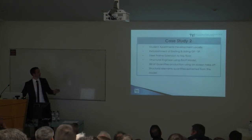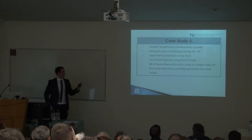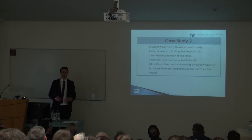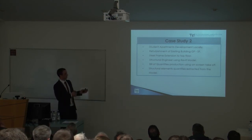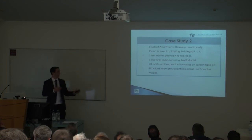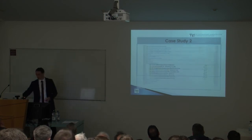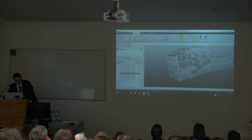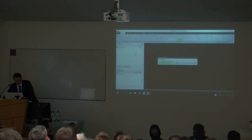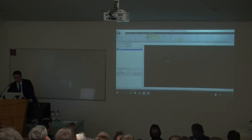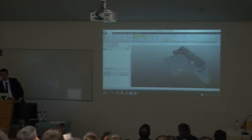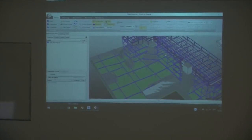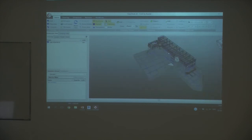The second project is a student accommodation here in Galway. It's a refurbishment with a ground floor, second floor, and steel frame extension. The structural engineer on this job was using a Revit model — he was using Revit, everybody else was using 2D. So I did the bill of quantities in 2D and took off my quantities for the structure off the Revit model. The structural model shows all the darker steel on the top floor as the new steel, and he has also modelled all the existing steel.